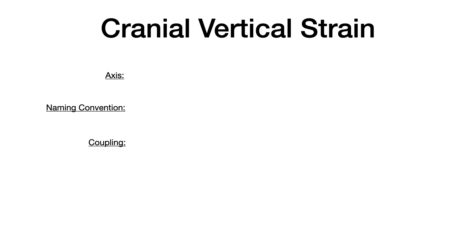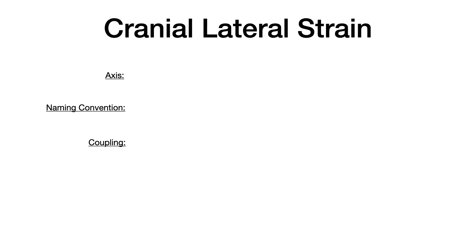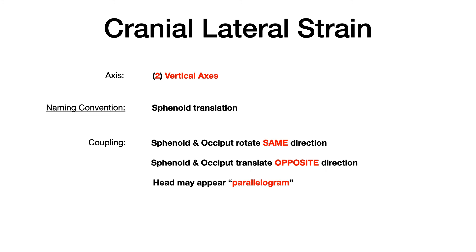For vertical strains, there are two transverse axes, and we name them based on the base of the sphenoid. The sphenoid and occiput rotate in the same direction. For lateral strains, there are two vertical axes, and we name them for the translational direction of the sphenoid. The sphenoid and occiput rotate the same direction but translate in opposite directions — because of this, the head appears in a parallelogram formation. If you see the term 'parallelogram' in a COMLEX vignette, they're hinting at a lateral strain. Very, very high yield.